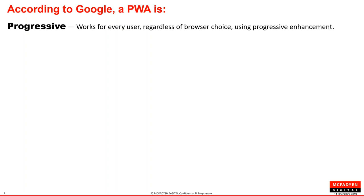By the first word in the title, PWAs are progressive — meaning they progress in capability based on what's available on that device and browser. If notifications, alerts, camera access, location data, local storage, or Bluetooth become available or are not available, the app will leverage those capabilities as made accessible. This varies based on the browser and device.